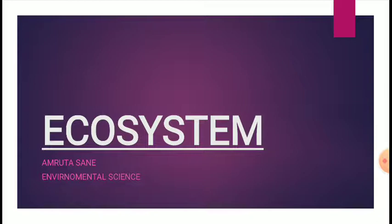What is an ecosystem? An ecosystem is a basic, functional, ecological unit. It consists of living organisms and non-living organisms. It is an interacting system. Many different types of ecologists have defined it in many different ways. Odum, a well-known ecologist, says that ecosystem is the basic, fundamental unit of ecology which includes both the organisms and the non-living environment, each influencing the properties of the other, and each is necessary for the maintenance of life.